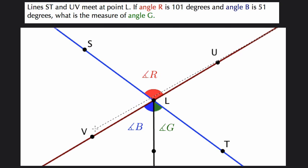So these two lines cross each other's paths and meet here at point L. And they tell us that angle R is 101 degrees. Angle B is 51 degrees, right here.